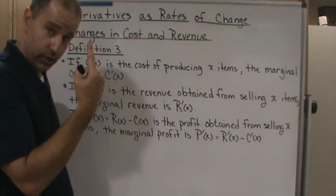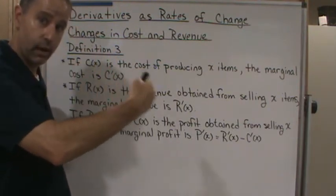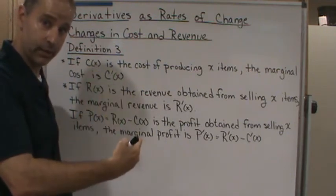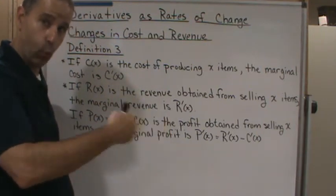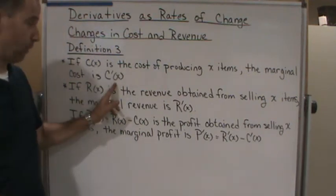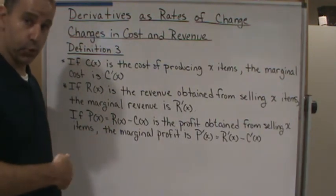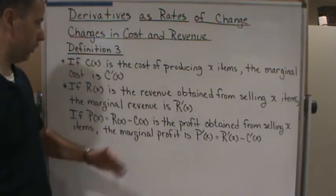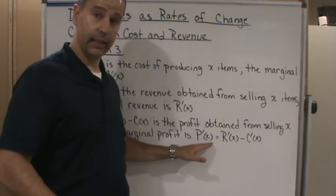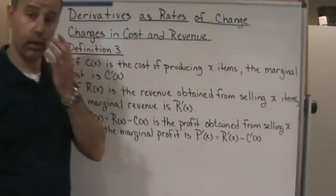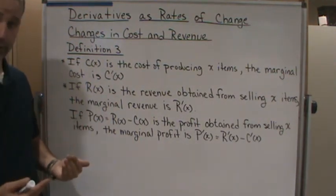In this case, the change represents selling one more item, because we're talking about increments of one — we can't sell half a widget or a quarter of a widget, so the smallest increment is one item. So we can look at the marginal cost, marginal revenue, or marginal profit as the cost to produce one more item, the revenue when we sell one more item, or the profit of making and selling one more item.